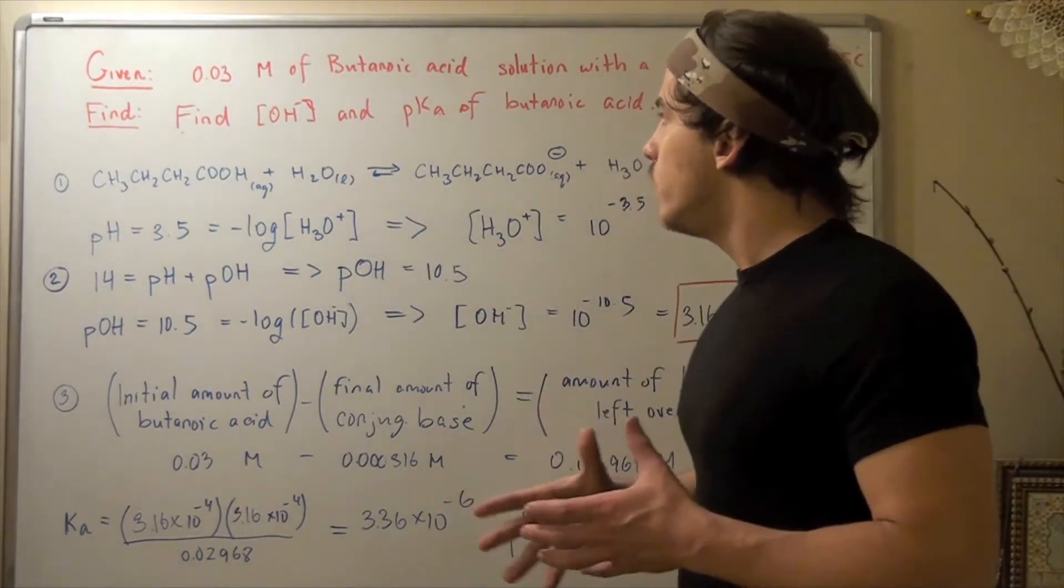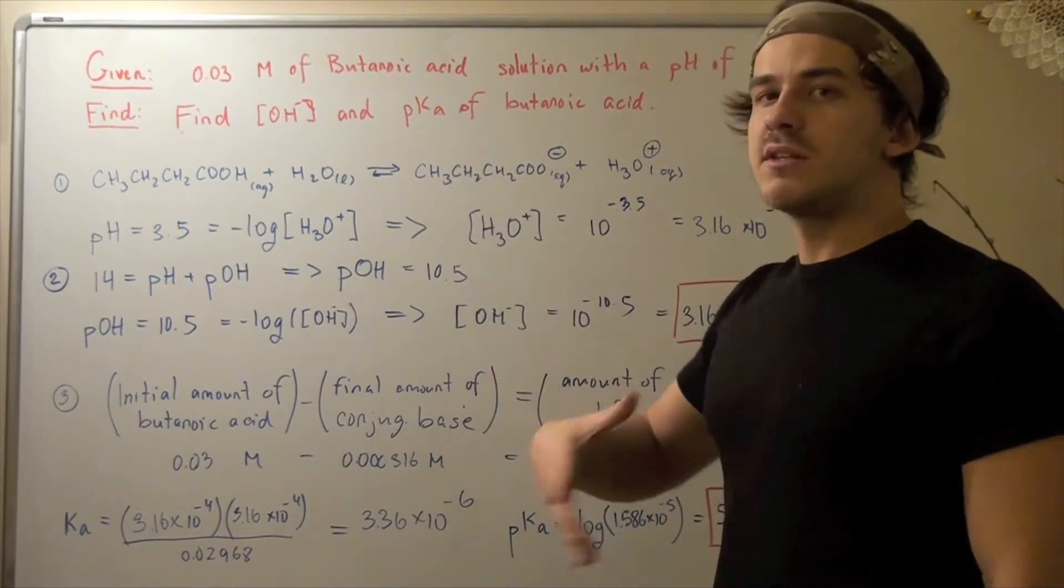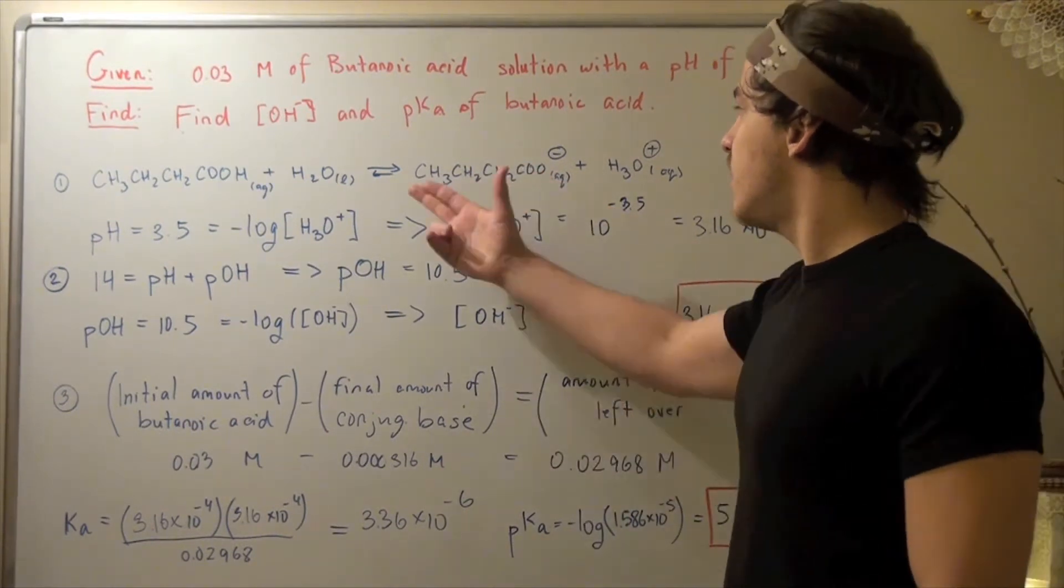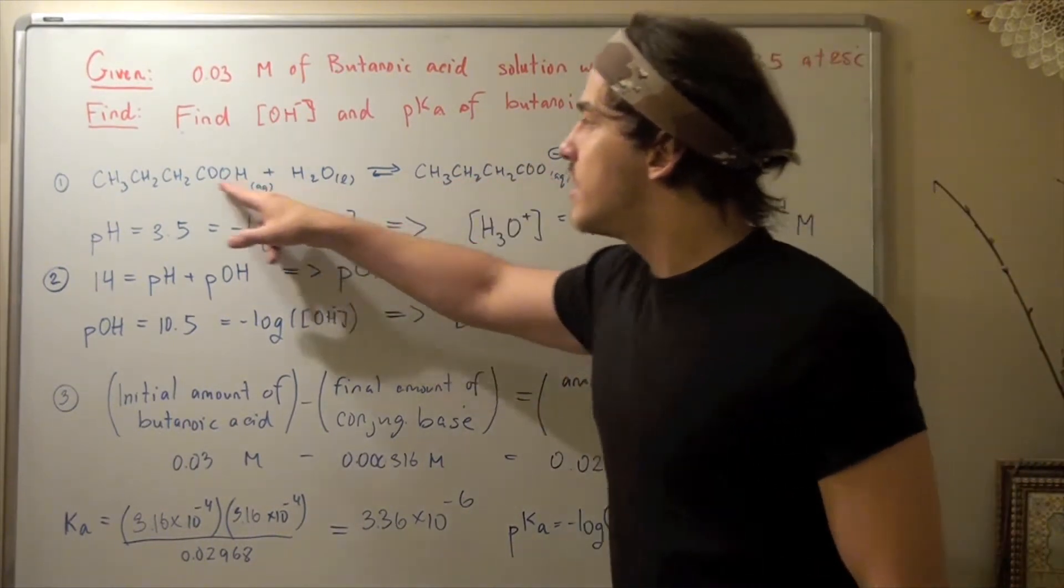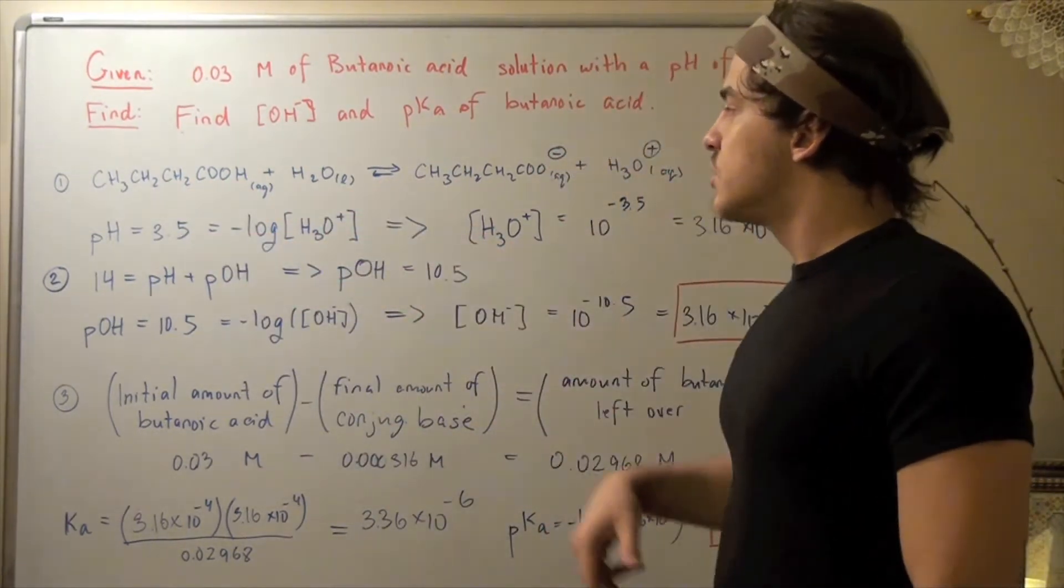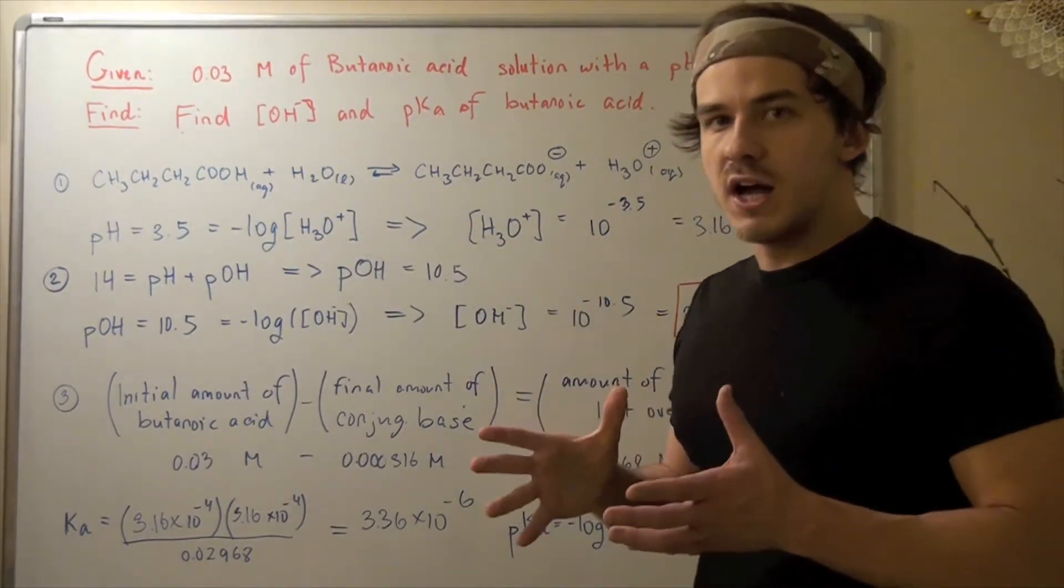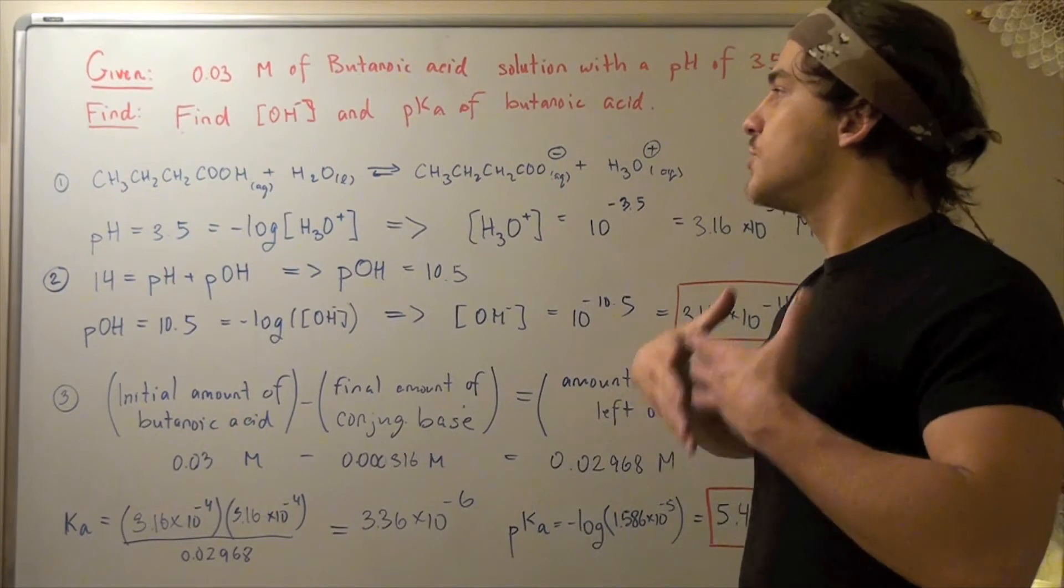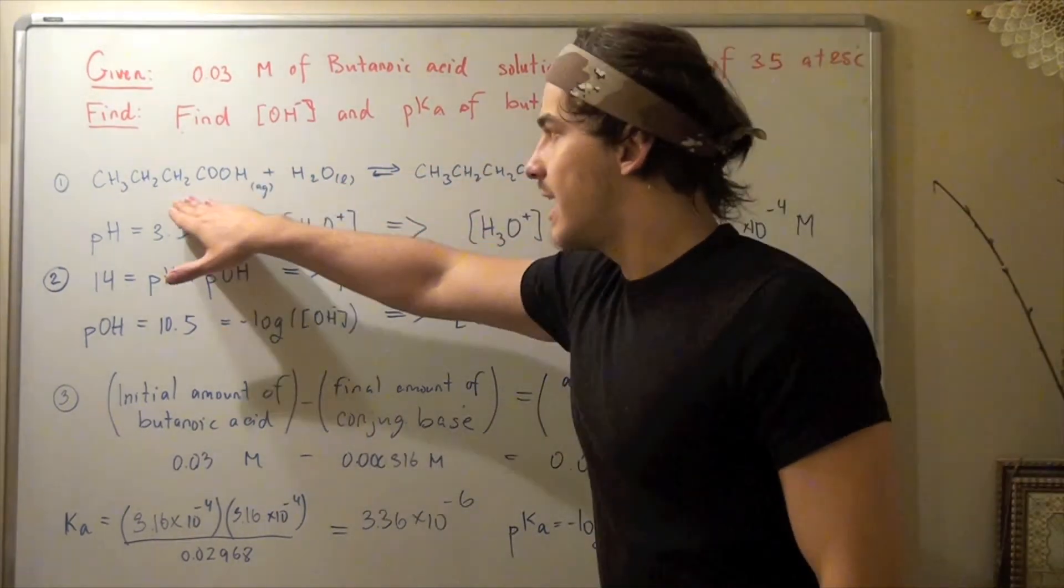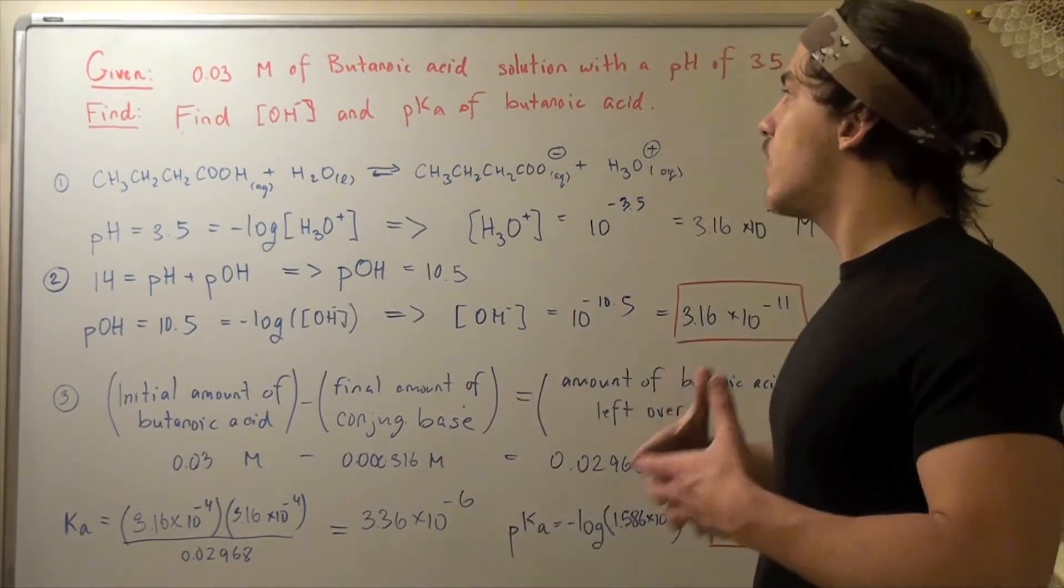Now our goal is to find the Ka and then we can find the pKa by using the log formula. So what is Ka? Ka is the ratio of these products to this reactant. Remember, we don't use the liquid component, so we don't care about water. What we want to find is the equilibrium concentration of each species, then plug that into our equilibrium expression to find Ka.